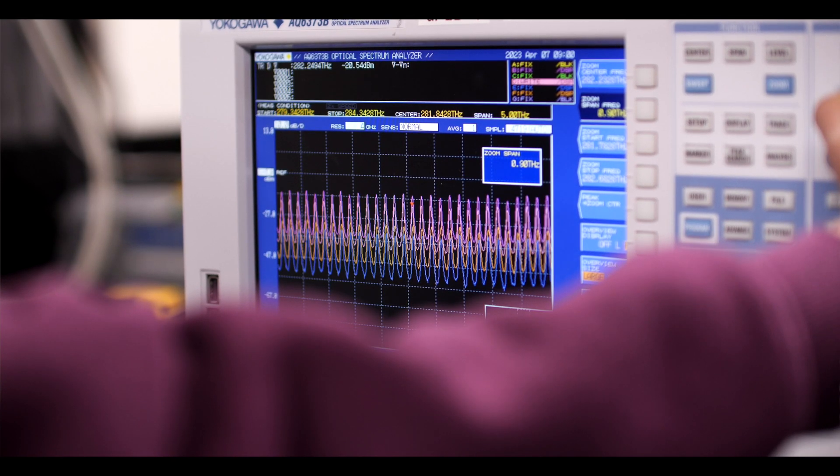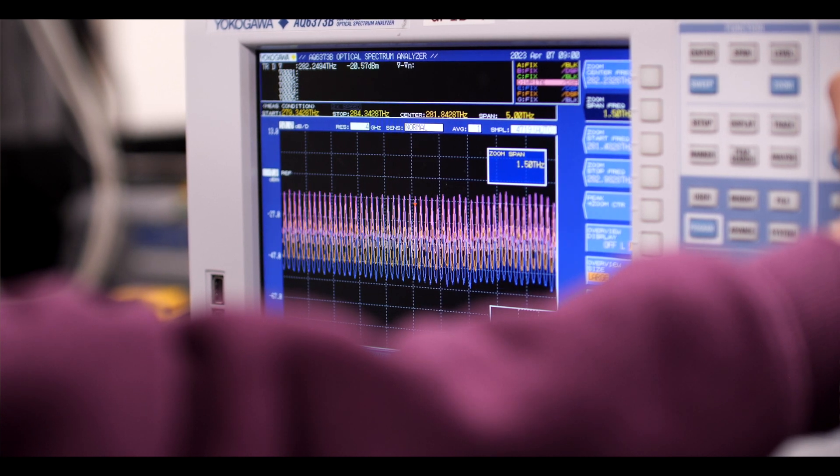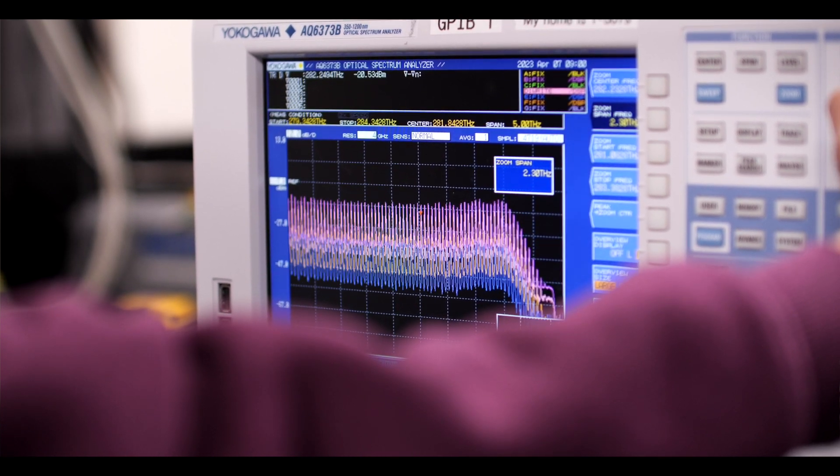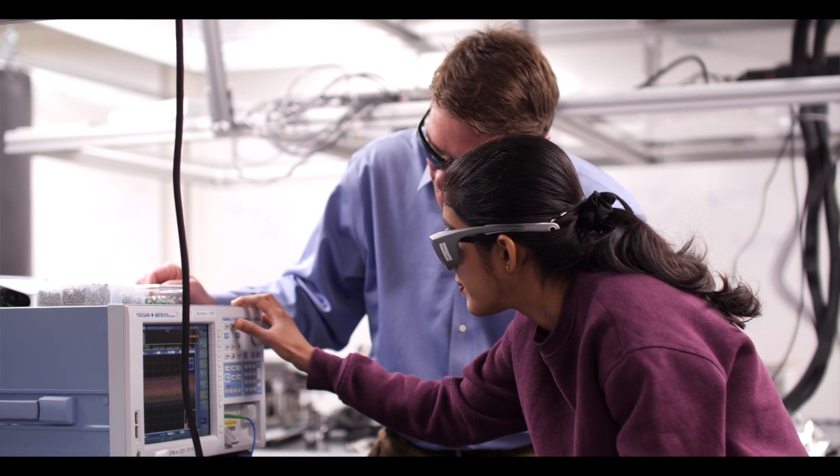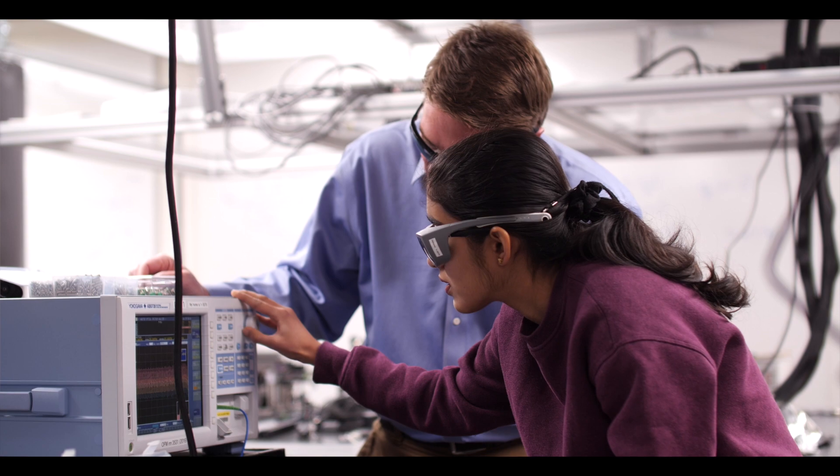We use a tool called an optical frequency comb, and that optical frequency comb is like a ruler for light. It allows us to make the most precise measurements ever of the wavelength or the color of light that would be coming from a star.